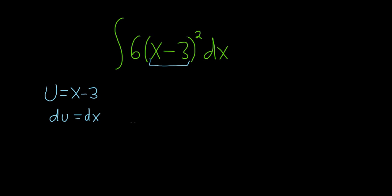And this is a really clean problem because now we just make the substitution. So we still have the integral sign. We have the 6. And this piece here, the x minus 3, that becomes your u, so u squared. And your dx simply gets replaced with du. Really nice and clean.